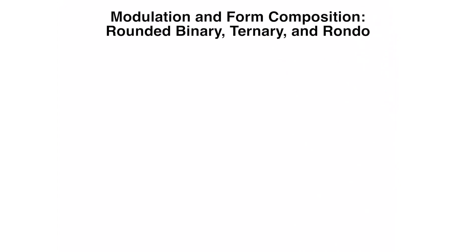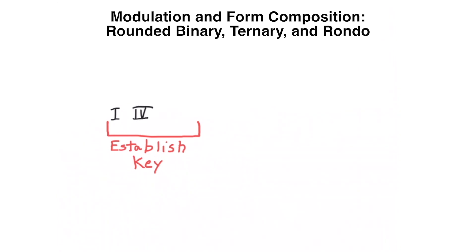Since our chord progression will include modulation, we want to first establish the original key. We will do this by starting with a I chord, followed by a subdominant function chord — either 4 or 2 — followed by a dominant function chord, either 5 or 7, and then we will return to 1. Let's use the starting key of C major.